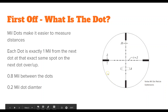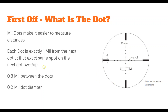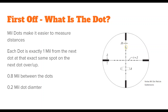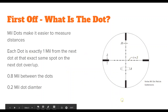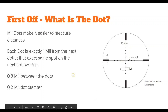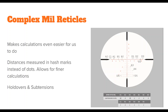This is an example of the Vortex mil-dot reticle on the Viper. What you need to know is that any point on one dot — say this black point — is exactly one mil away from that same exact point on the next dot down. That's true for all of them. On this particular scope, which is pretty standard, the distance between two dots is 0.8 mil going from the bottom of one to the top of the other, and the diameter of the mil dot itself is 0.2 mil.